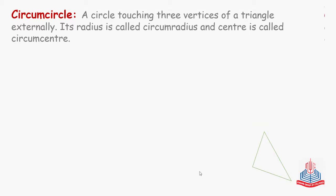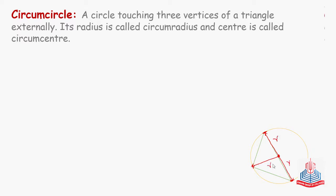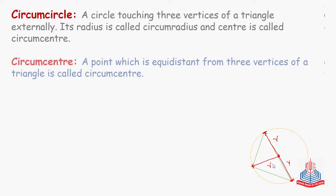This is a triangle and this is a circumcircle — a circle touching three vertices: here, here, and here. Now, suppose its center is here. The distance from the center to each vertex — these three distances are all equal, and we call this the circumradius. So, the definition of circumcenter is: a point which is equidistant from the three vertices of a triangle.